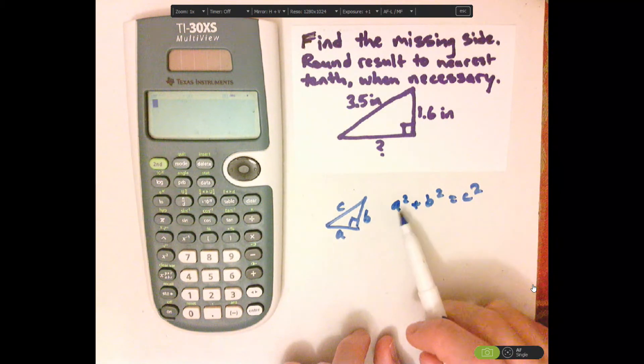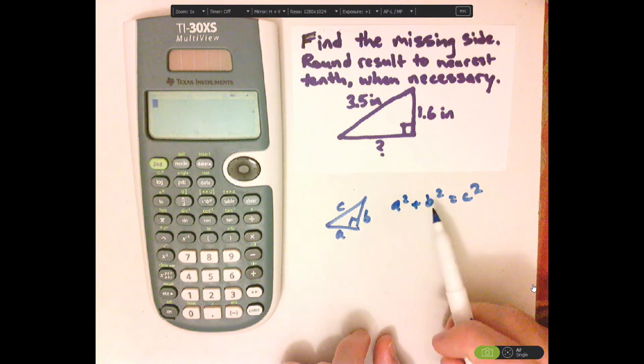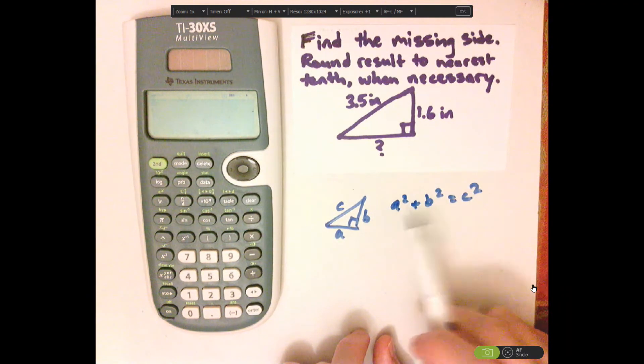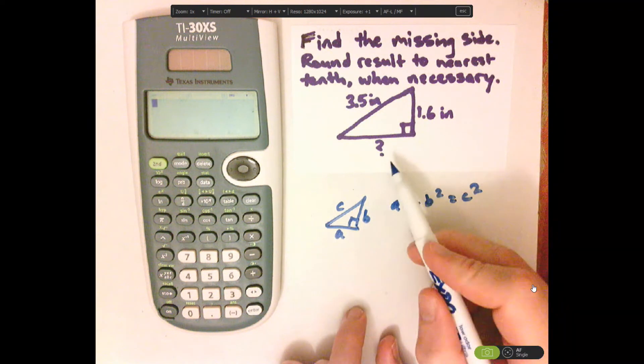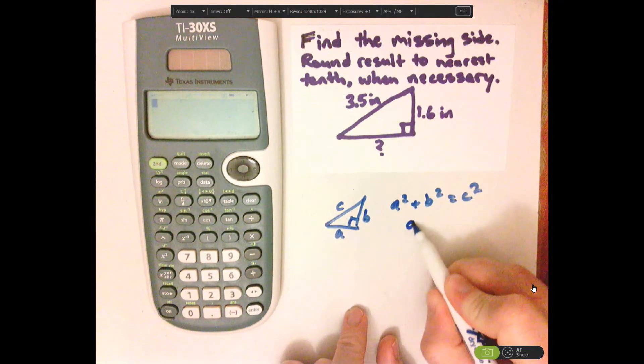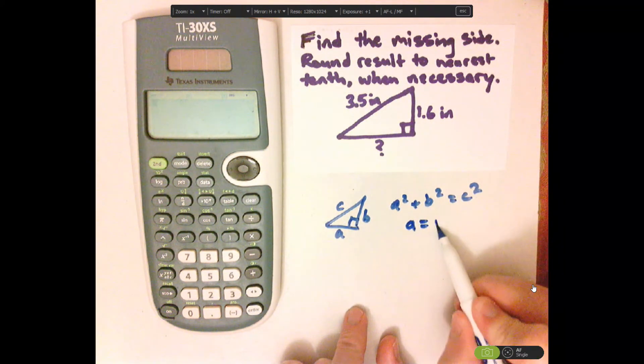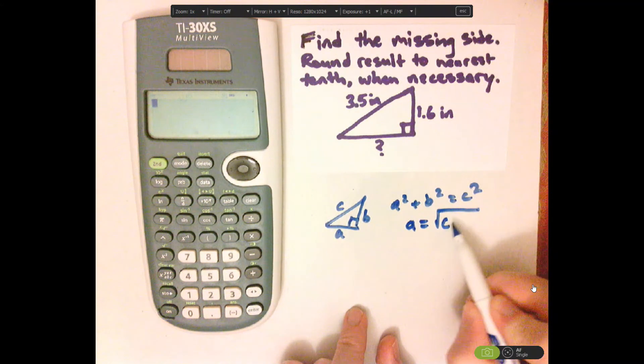If I'm looking for either one of the legs, either A or B, I have to subtract the other from this side, and then take the square root. So we're looking for A here, so A equals the square root of C squared minus B squared.